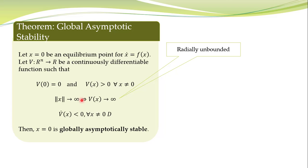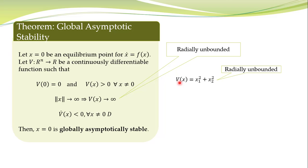To study the global asymptotic stability of an equilibrium point, we have to take a candidate Lyapunov function which is radially unbounded. For example, here we have a function. As the norm of x tends to infinity, we see that V of x will also tend to infinity. Therefore, this function is radially unbounded.